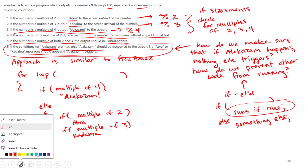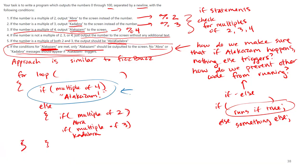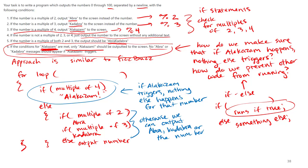And then we put everything else separate. So notice, if we use an approach like this, if Alakazam triggers, nothing else will happen for that number. Otherwise, we can output the other conditions. So keep this in mind. Notice how cleverly designed if and else statements can make programs a lot easier to write and modify.